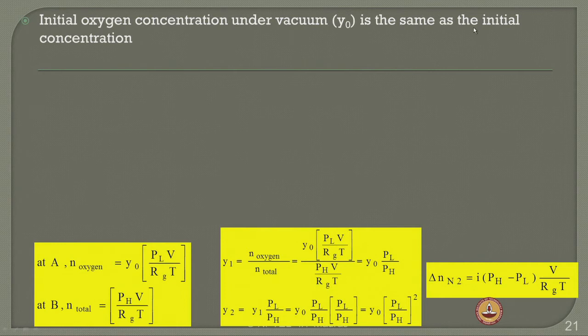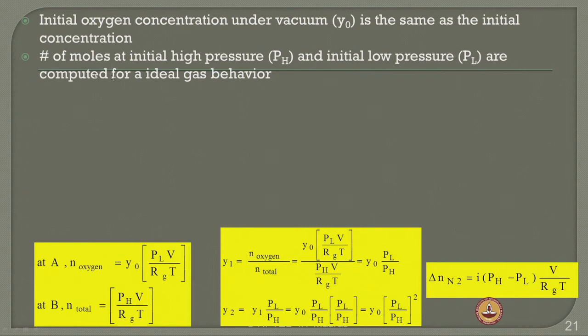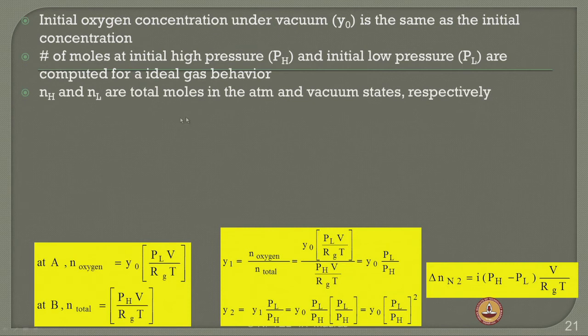Number of moles at high initial pressure P_H and initial low pressure P_L are computed for ideal gas behavior. When N_H and N_L are the total moles in the atmospheric and vacuum states respectively, for every concentration cycle one can compute the oxygen concentration at each level as Y1, Y2, and so on. For finding out Y1 you need to know Y naught; for Y2 you need Y1. This is a sequential step of purging done using these equations, with the number of moles for oxidants calculated using Dalton's law.